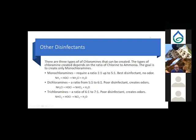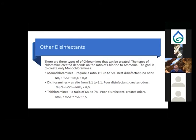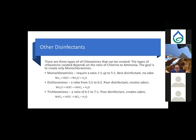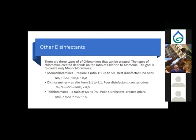There are three types of chloramines that can form, and the type depends entirely on the chlorine-to-ammonia ratio. The goal is to only create monochloramines. For any ratio between 1:1 and 5:1 chlorine to ammonia, monochloramines are formed. The reaction: ammonia plus hypochlorous acid — chlorine replaces one hydrogen on the ammonia molecule, yielding monochloramine and water.